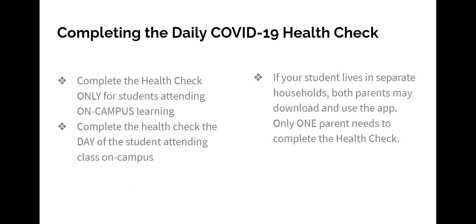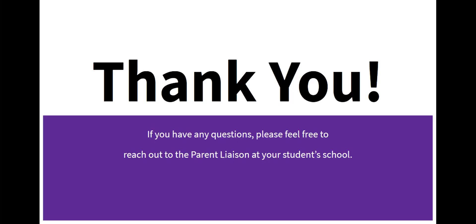Please note that the health check is only for students attending on-campus learning that day. Be sure to only complete the health check the day that the student is attending on-campus classes. If your student lives in separate households, both parents may download and use the app, but only one parent should complete the health check each day. If you have any questions about using the Frontline Health Portal or completing the daily survey, please feel free to reach out to your student's school and ask to speak with the parent liaison. Thank you for your time.